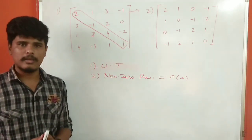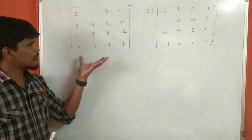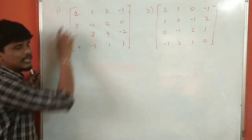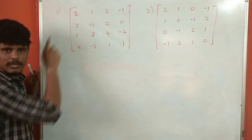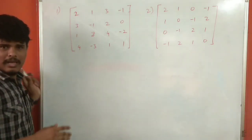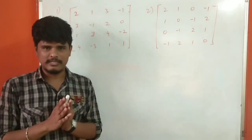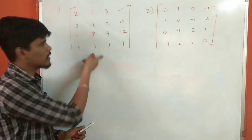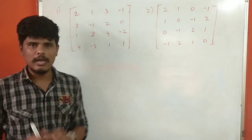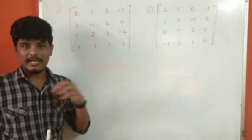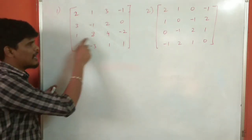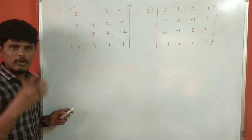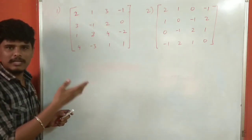Now let's apply this to the problem. I will work with the upper triangle matrix. What I will do is try the first element and exchange rows if needed. We can add rows, subtract rows, or multiply a row by a constant such as 2, 3, or minus values.